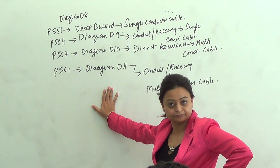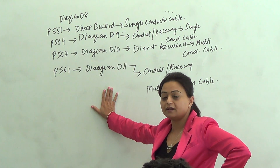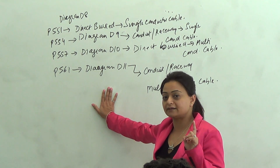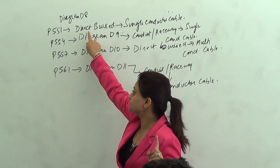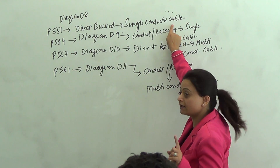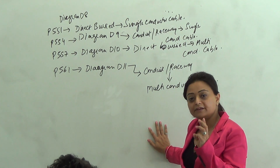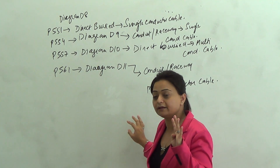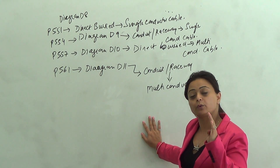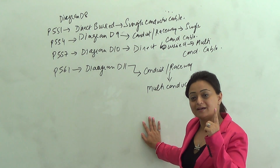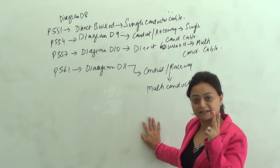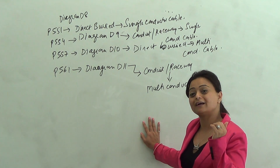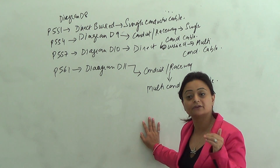What size wire would I choose? None of that part of the question said parallel run. But the key words that I just said were conductors are directly buried and they are single conductor cable. These four diagrams, diagram V8 all the way to diagram V11, talk about whether the installation is single conductor cable or multi-conductor cable. It's further subdivided into whether I am installing it without the conduit or with the conduit.